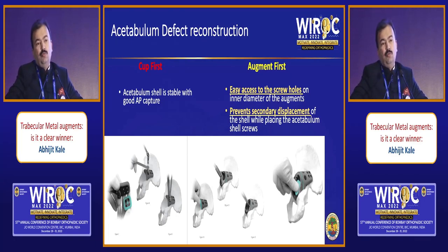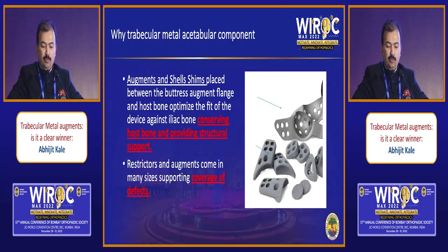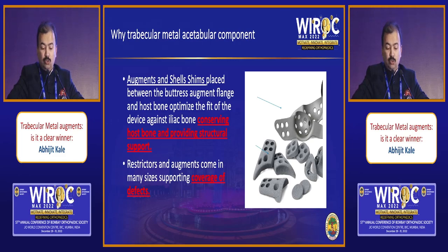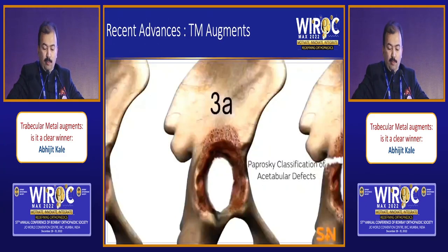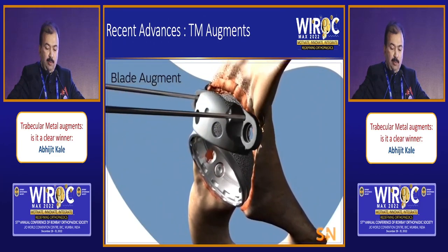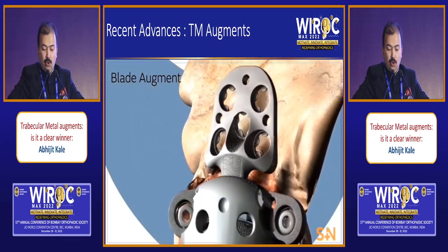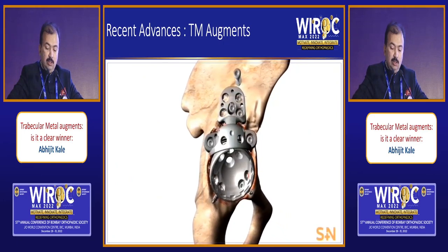An important technical issue is sequencing: whether to place the cup first or the augment first. If you have a good capture with the cup, go ahead with the cup first, then place the augment over the defect. If you don't have a good cup capture, fix the augment first. Different companies have produced different augment options — for example, Smith & Nephew's blade augment for large superior defects, with the option of locking screws at variable angles for best support.